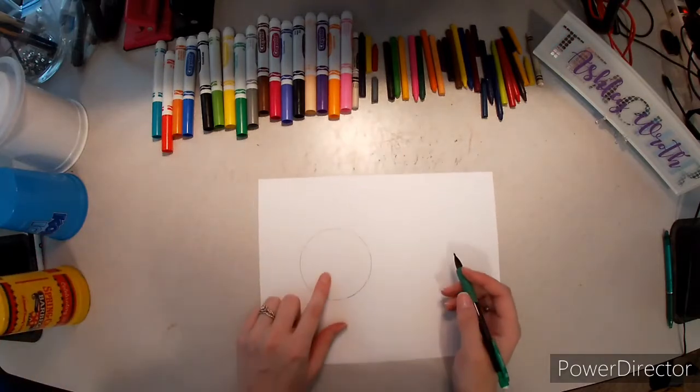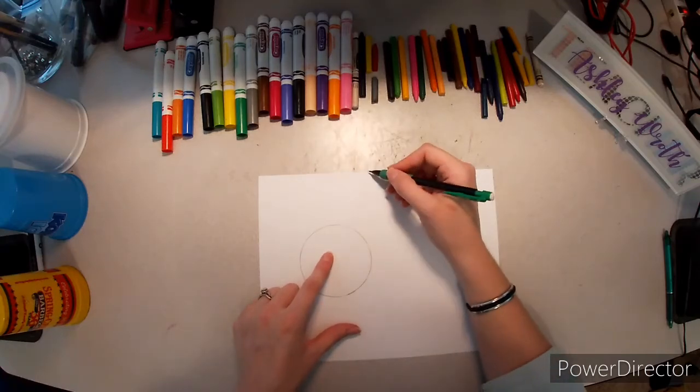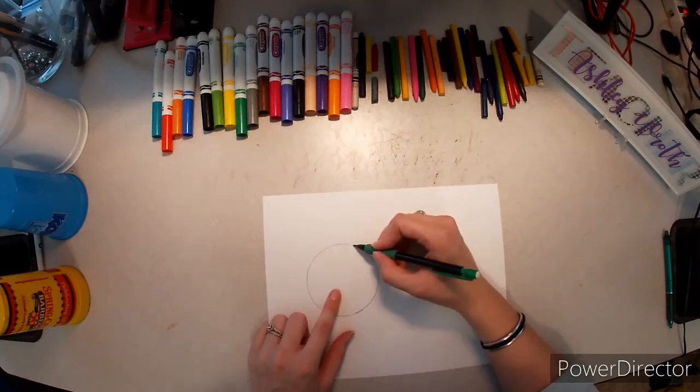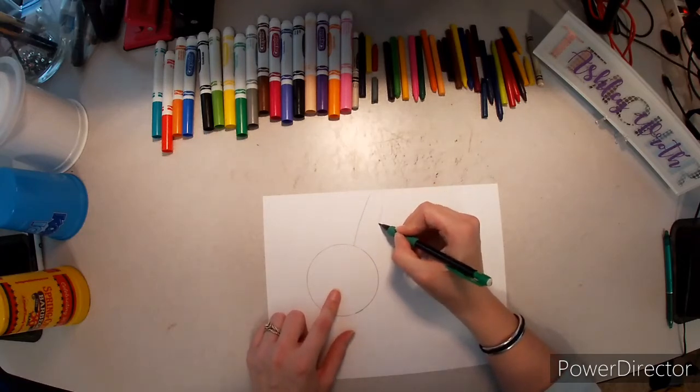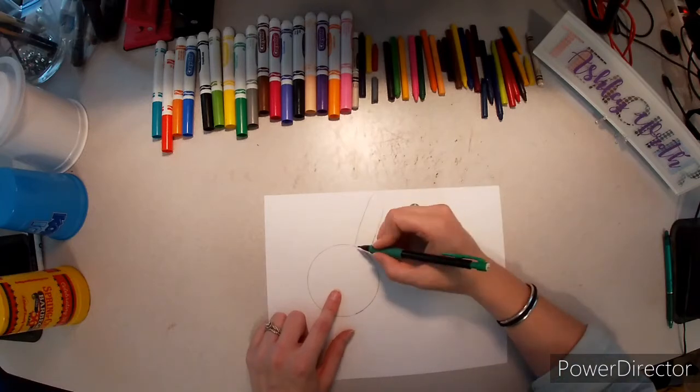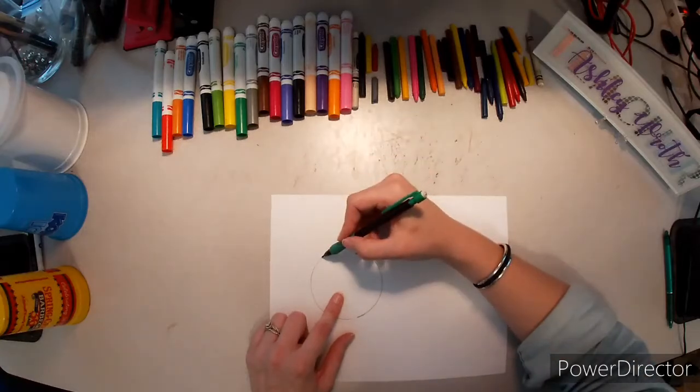Now we are going to do our rabbit's ears. The length of your rabbit's ears will depend on how much room you have left on your paper. So I am going to go up and down, and I can do a skinnier one on the inside for the interior of my rabbit's ears.